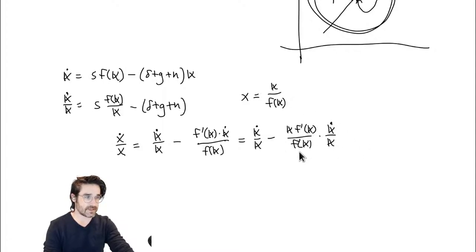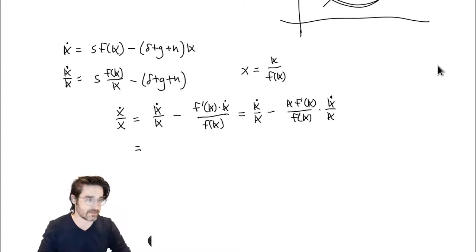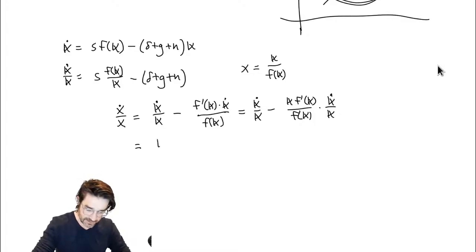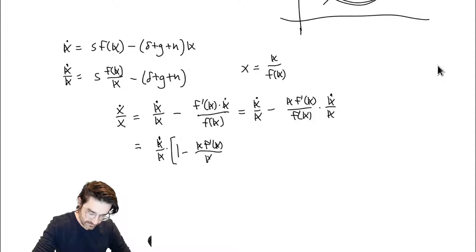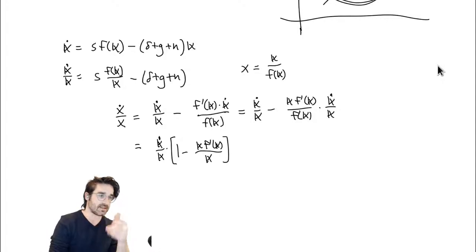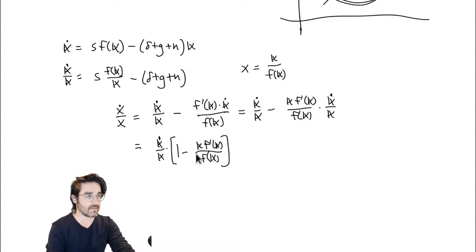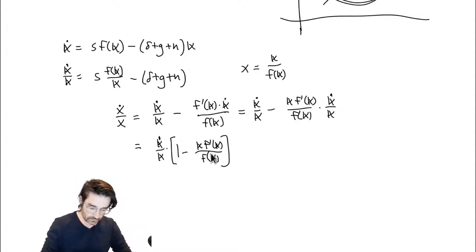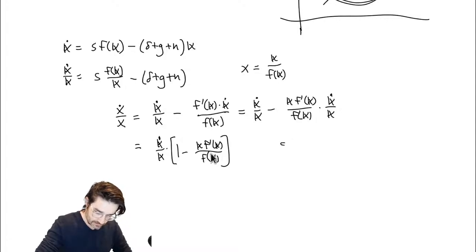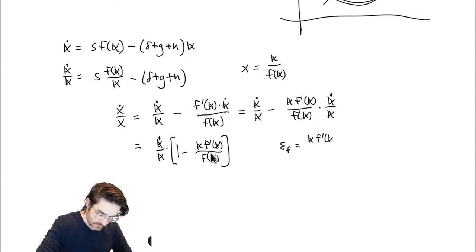We get K-dot over K times (1 - K times F prime of K over F of K). It turns out that this quantity K times F prime of K over F of K is a known quantity — it's the elasticity. We define epsilon sub F as K times F prime over F of K, which is the elasticity of the function F with respect to K.